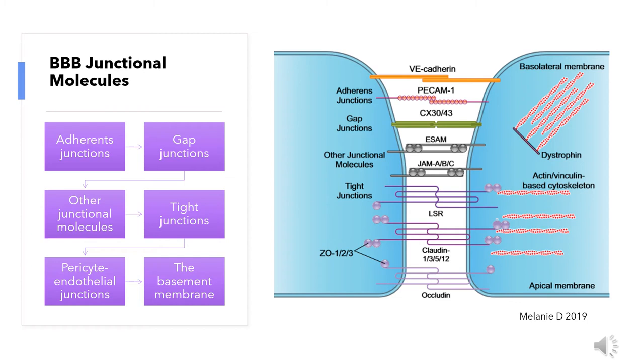Zona occludens 1, 2 and 3 bind occludin and claudin to the cytoskeleton, stabilizing the cellular structure.